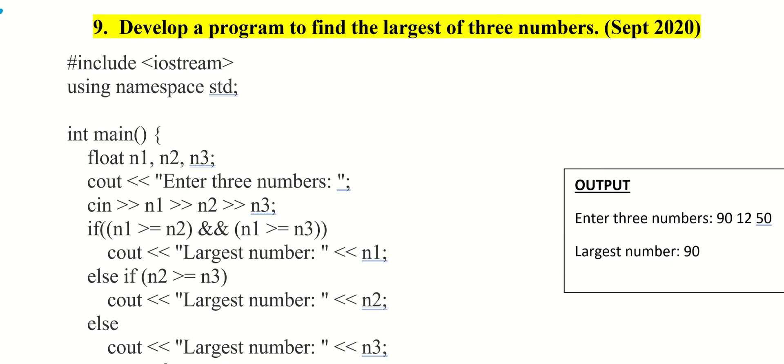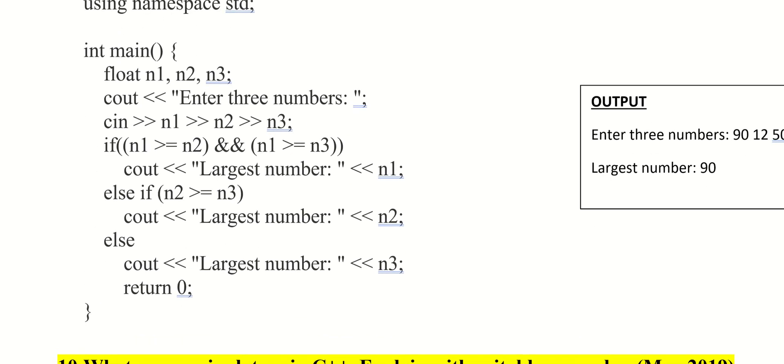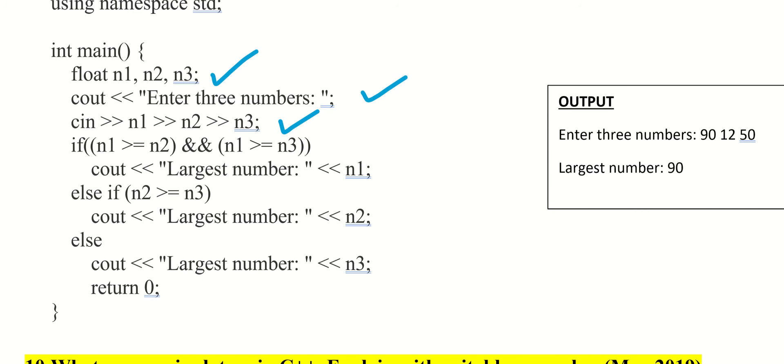We don't have a concept yet. First we have to input 3 numbers. The 3 numbers I will declare as float. I will put 3 variables, declare them, input the 3 numbers and read them — for example 90, 12, 50. So n1 is 90, n2 is 12, n3 is 50.